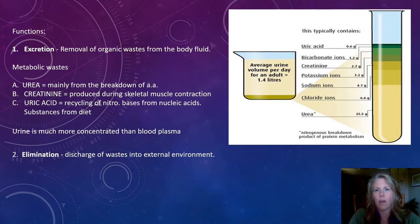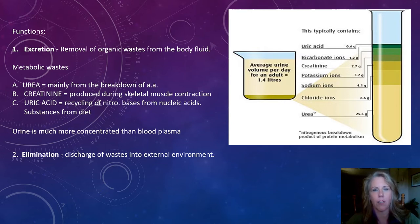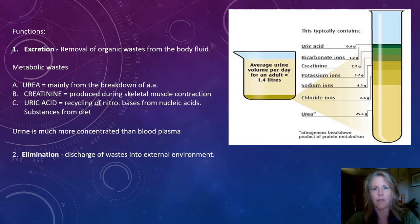Urea comes from the breakdown of amino acids. When we're breaking down amino acids, we get urea. We cannot use urea — it's a waste product, and so it needs to be excreted out of the blood by the kidneys.